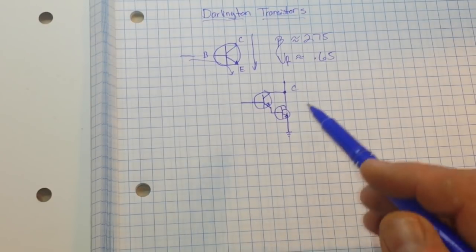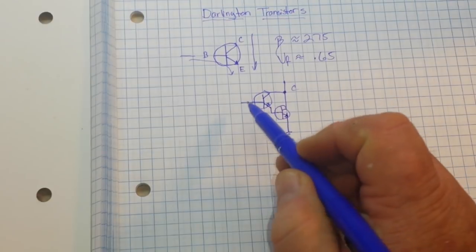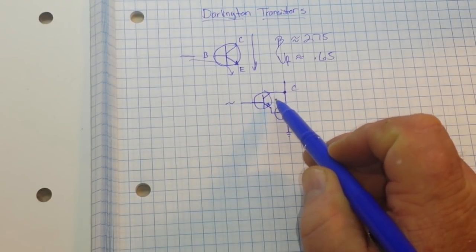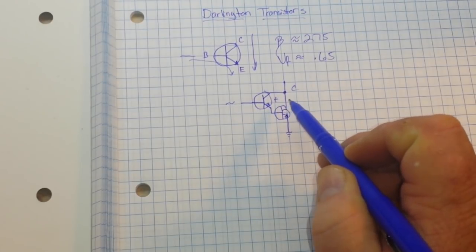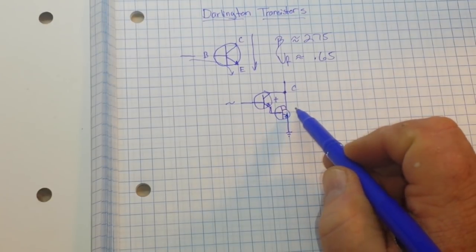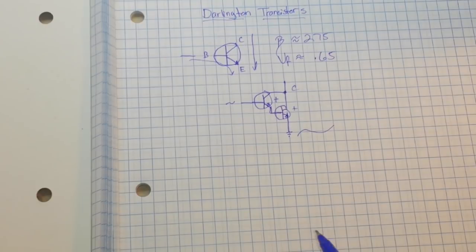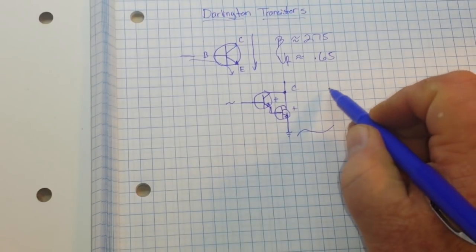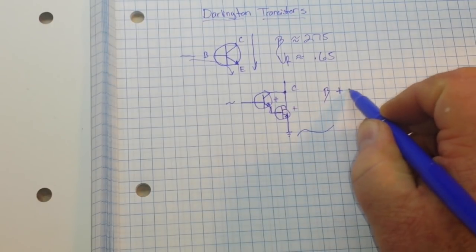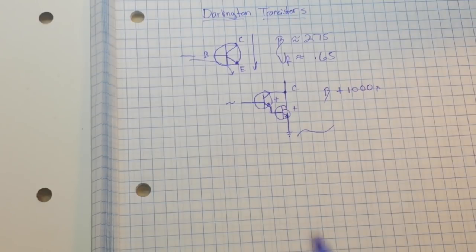Now when we pass our small current in here, it's amplified by the first one, passes through the emitter into the base of the second one, and is further amplified. We get a larger gain. The gain of a Darlington pair can be over a thousand times, so they're incredibly useful.